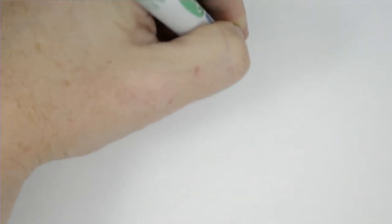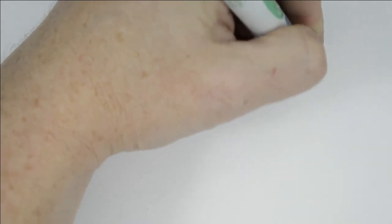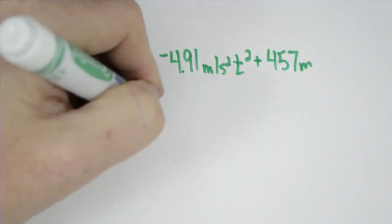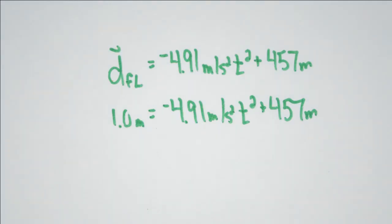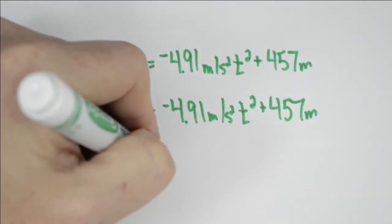So we set up our equations to solve for this. We start with Lois Lane. We know the equation that describes her, and we know that she finishes 1 meter above the ground. So we set up the equation. We can work through this and solve.